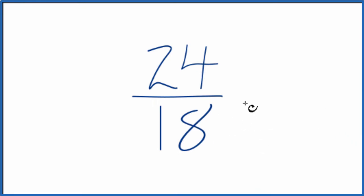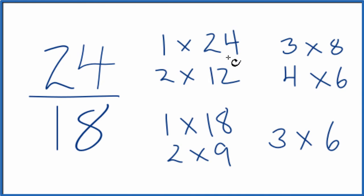And to do that, we need to list the common factors for 24 and 18. They look like this. So when we look at the factors for 24 and 18, the greatest common factor, that is 6.